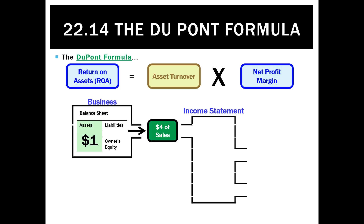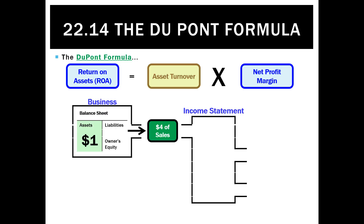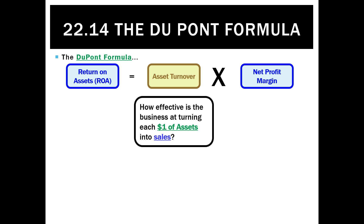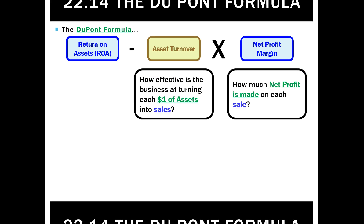So we also look at the net profit margin. If four dollars of sales go into the income statement, take out cost of goods sold — let's say $1.80 — giving us gross profit of $2.20. Take out other expenses of $1.40 and we're left with net profit of 80 cents. Between those two formulas we can see how good we are at generating sales and whether we're actually making a profit on each one. By multiplying those two numbers together we're getting the best of both worlds.